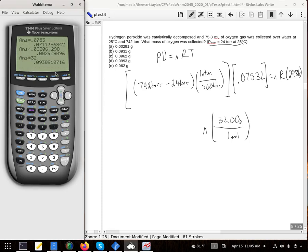So the answer is 0.0903, so it is B. A common mistake, people forget to convert on this. If it does ask for mass, you get your moles from PV equals nRT. So make sure you check your units.